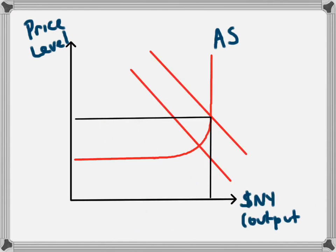Most economies, however, operate in this medium range, and it is here that we'd be able to examine the effect of fiscal policy most often. Originally we would have aggregate demand equal to AD1, which would correspond with a level of government spending of G1. The government decreases their spending to G2, and that leads to a decrease in aggregate demand from AD1 to AD2.